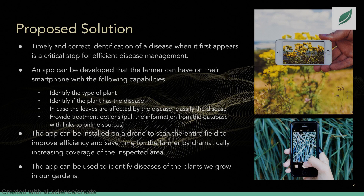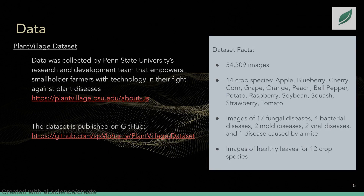Our proposed solution is an app developed to help farmers. Using such an app, we can identify the type of plant, detect if the plant has a disease, or detect the type of disease. The app can also provide treatment options. Additionally, it can be installed on a drone to improve efficiency and save time for farmers by dramatically increasing the coverage of the inspected area.